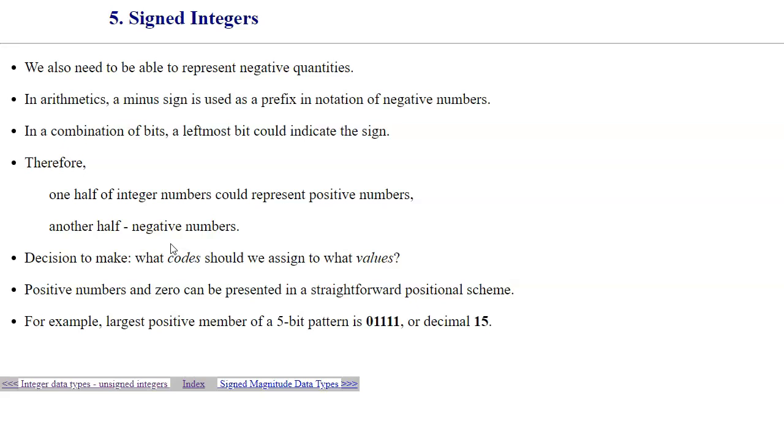One half would represent positive numbers and another half of that space of unique combinations would be reserved for negative numbers. We have to make a decision what codes and encodings in general would we assign to encode the values, both positive and negative.